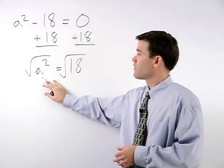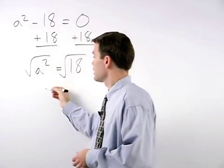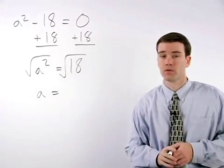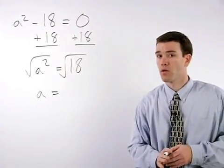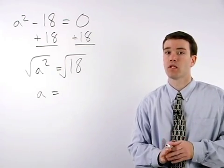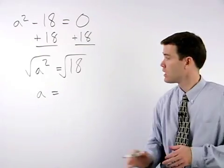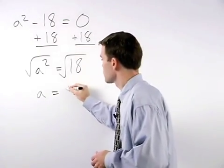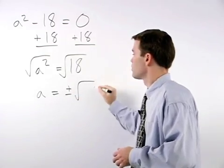On the left, the square root of a squared is a. And on the right, remember the following rule: when square rooting both sides of an equation, always use plus or minus. So on the right side of the equation, we have plus or minus root eighteen.